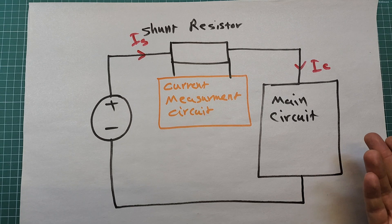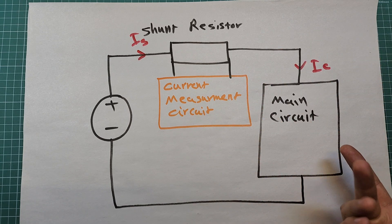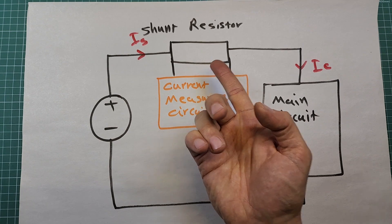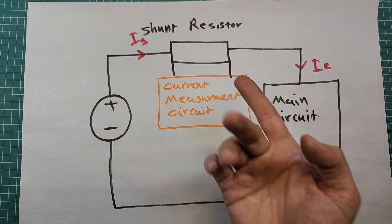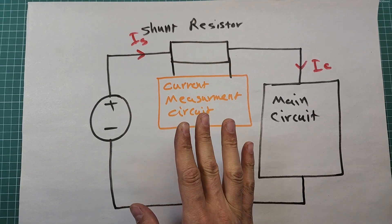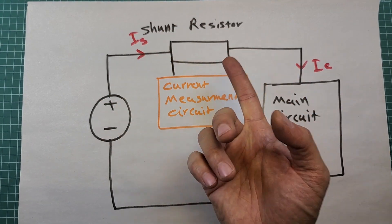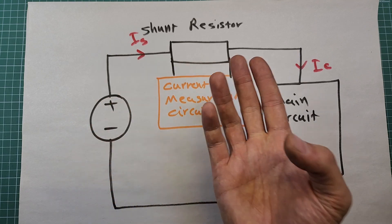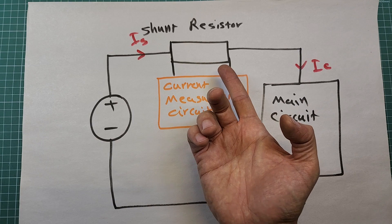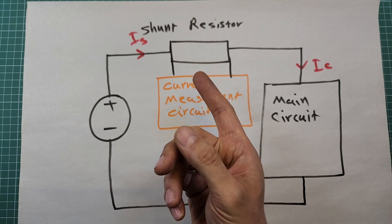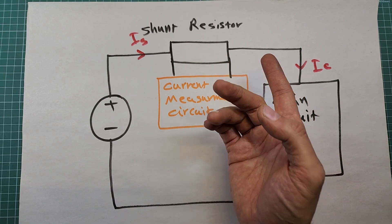This effect is more significant when a large current passes through the shunt resistor or when the operating voltage of the main circuit is very low — for example, one volt or half a volt. The shunt resistor also has power dissipation, which can cause problems in applications where power consumption is critical. Furthermore, power dissipation causes the shunt resistor to heat up, which changes its actual resistance value and introduces more error in the measured current.